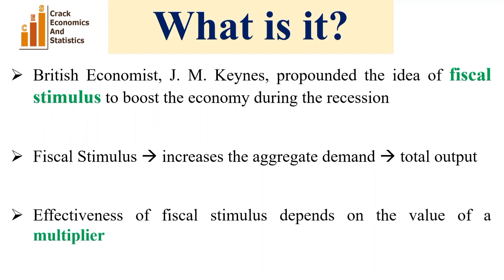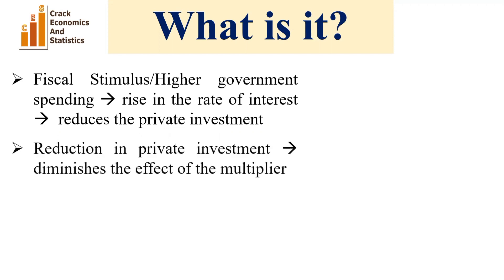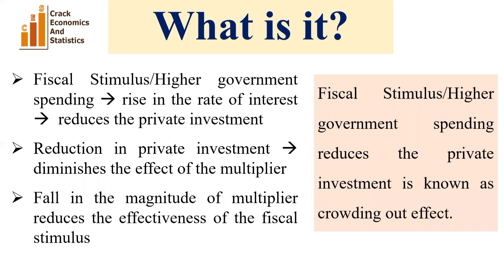The effectiveness of fiscal stimulus depends on the value of the multiplier — the higher the value of the multiplier, the larger the effect of fiscal stimulus, and vice versa. However, fiscal stimulus or higher government spending leads to a rise in the rate of interest, which in turn reduces private investment. This reduction in private investment diminishes the effect of the multiplier and hence reduces the effectiveness of the fiscal stimulus.